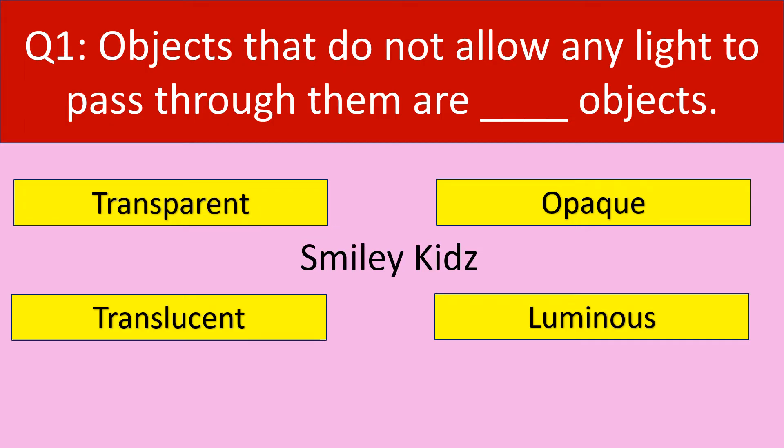Question number 1. Objects that do not allow any light to pass through them are dash objects. Your options are: Transparent, Opaque, Translucent, Luminous.